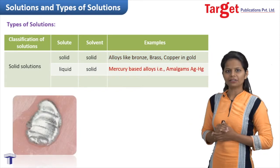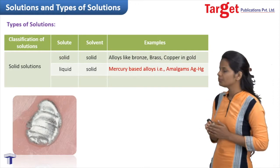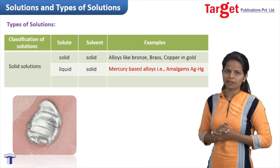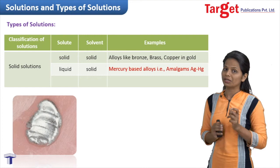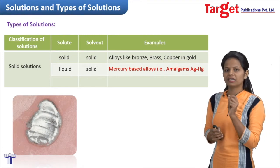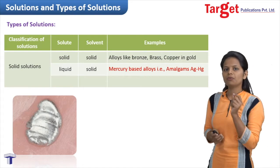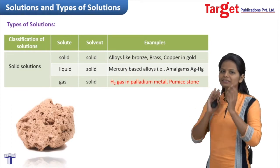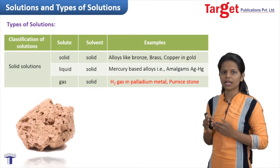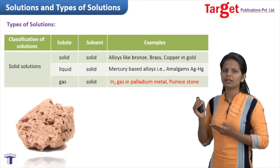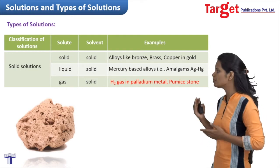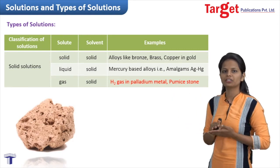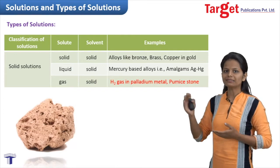The next category is liquid-in-solid type of solution. The simplest example is mercury-based alloys, also called amalgams. When you go to a dentist for a cavity filling, he adds silver amalgam (AgHg), which becomes a liquid-in-solid type of solution. The final type of solid solution is gas-in-solid. In organic chemistry, many reactions require hydrogen gas to be absorbed on a surface — generally platinum or palladium, which is solid. Gas getting absorbed on the surface of a solid is an example of gas-in-solid type of solution.